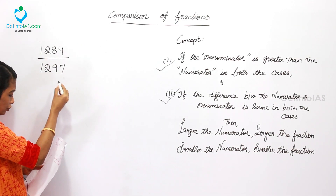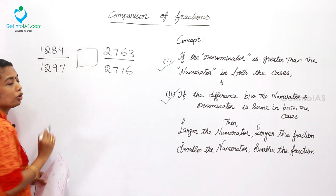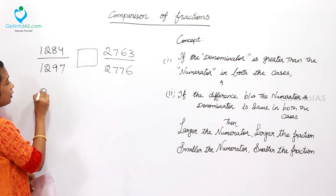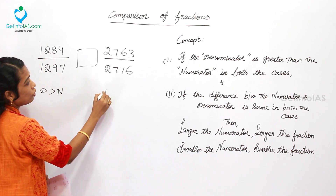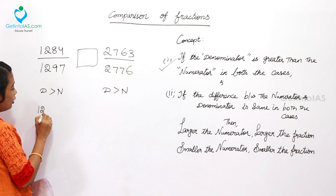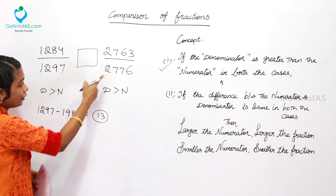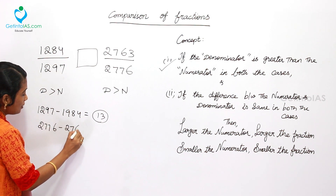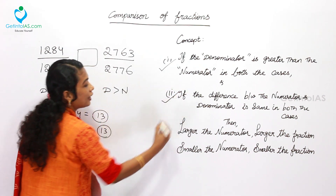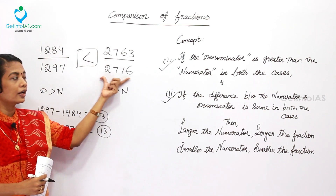Example 3: 1284/1297 compared with 2763/2776. First condition: denominator is higher than numerator in both cases — satisfied. Difference: 1297 minus 1284 is 13, and 2776 minus 2763 is also 13. Both differences are the same — second condition satisfied. The largest numerator is 2763, so 2763/2776 is greater than 1284/1297.